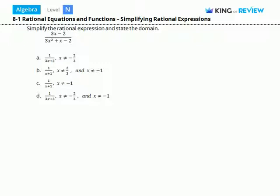Let's start by factoring the denominator. We get 3x minus 2 divided by 3x minus 2 times x plus 1.